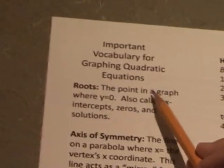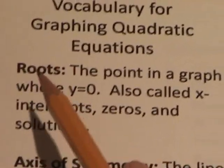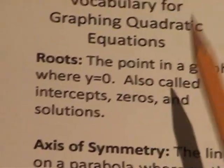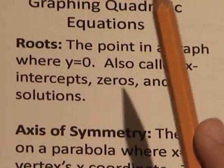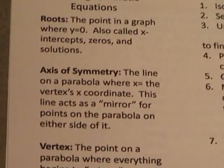Now, another method that you can use is graphing quadratic equations. There's some more vocabulary that you need to know. For example, there are the roots. These are the points in any graph of a quadratic equation where y equals 0. These can also be called the x-intercepts, zeros, and solutions, but they all mean the same thing.